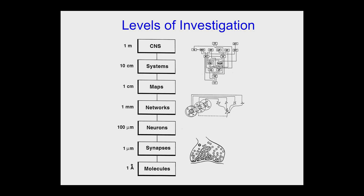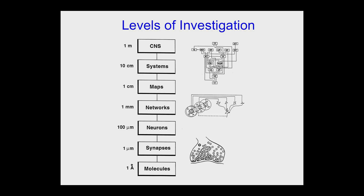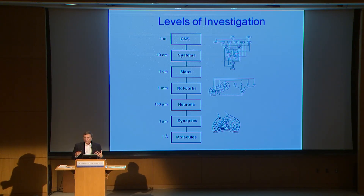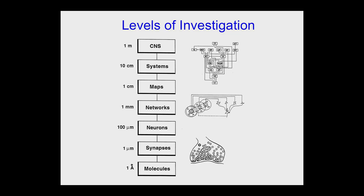We heard about brain imaging, the important technique that allows us to tap into large-scale patterns of brain activity. But how do you jump from these large-scale global patterns all the way down through all the systems and the maps? We heard about the visual system — it's a sequence of maps from primary visual cortex to dozens of higher areas responsible for recognizing objects. How are we going to connect the dots between all these areas? That's really the challenge.